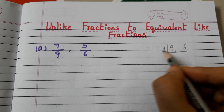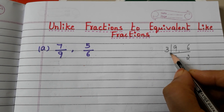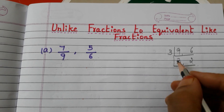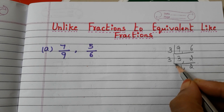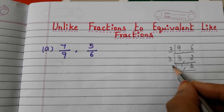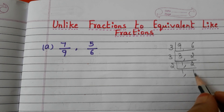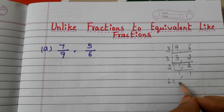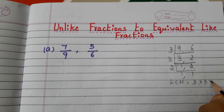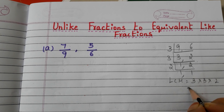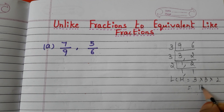Here we can take the number 3. 3 threes are 9, 3 twos are 6. Again 3: 3 ones are 3, bring down the 2. Here we can take 2: 1 and 2 ones are 2. Now LCM equals 3 into 3 into 2. 3 threes are 9, 9 twos are 18.